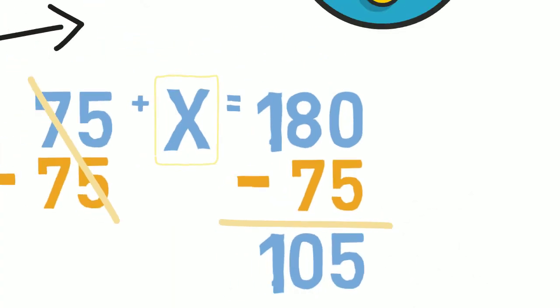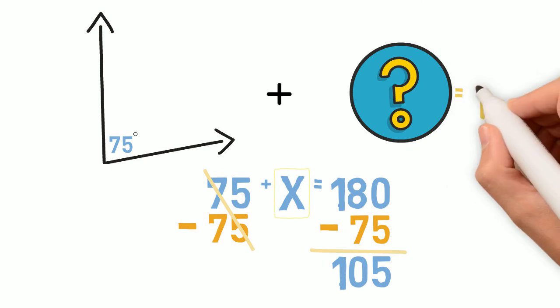So to have a supplementary angle with 75 degrees, we have to add a 105 degree angle.